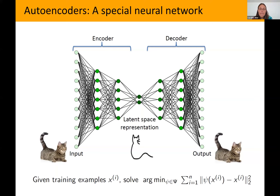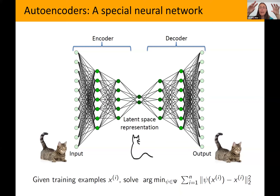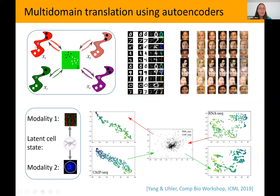Let's first talk about using autoencoders to integrate different data modalities — without a time component yet. I have a population of cells; I take some out for imaging, some for RNA-seq expression profiling. I want to answer: for a particular cell where I have the image, how would its expression profile look? Or for a cell where I have the RNA-seq vector, how would the corresponding image look? The key idea is that this setup is modular — you can add modalities as they come up: imaging, RNA-seq, single-cell Hi-C, ChIP-seq, anything you have.